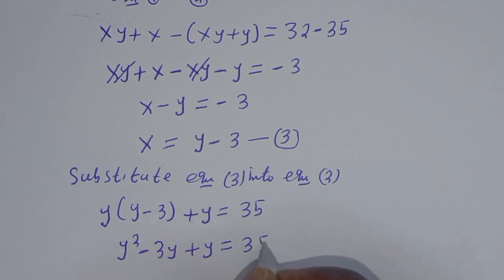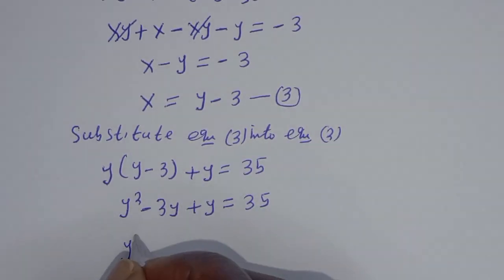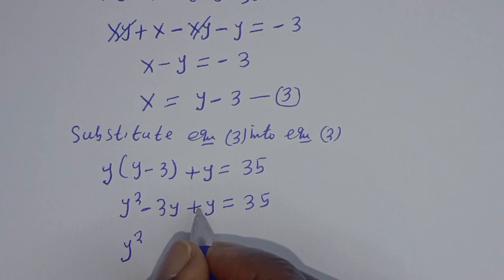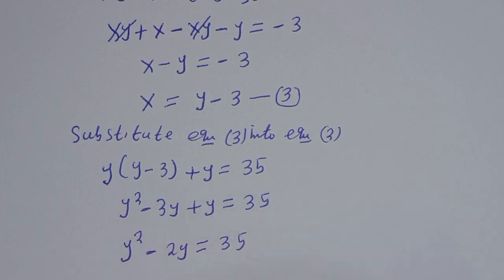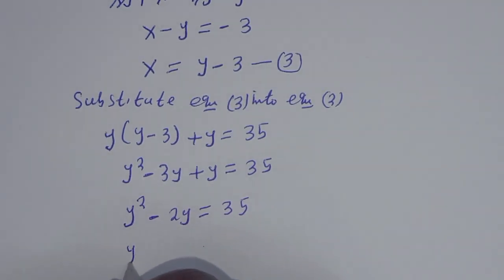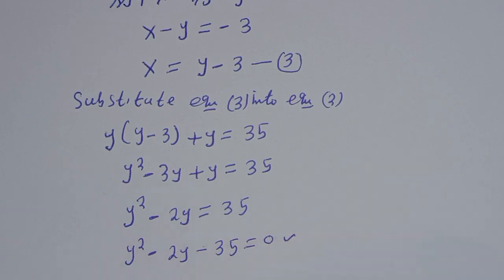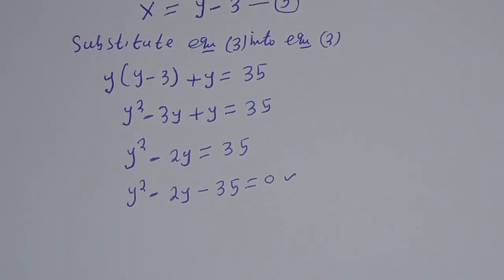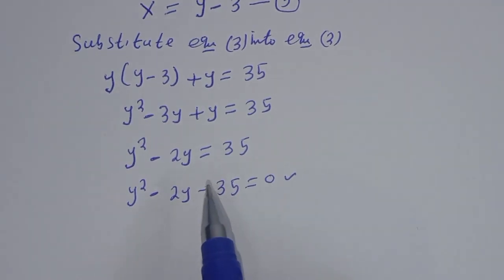So we have y squared minus 2y equals 35, which gives us y squared minus 2y minus 35 equals 0. This is a quadratic equation. We'll solve this using the quadratic formula or factorization method.